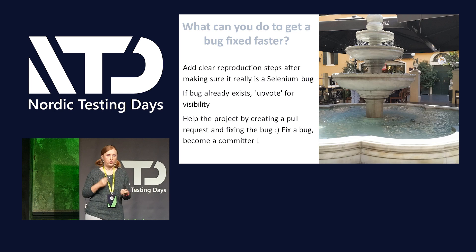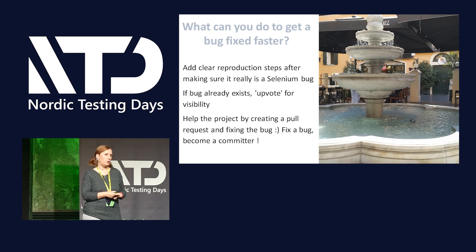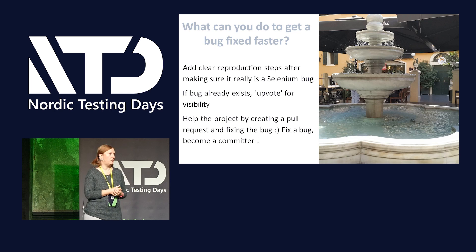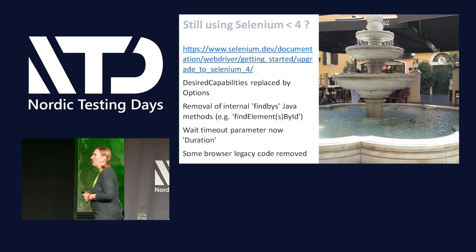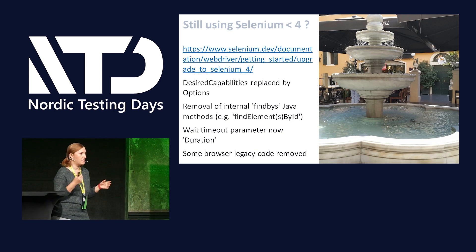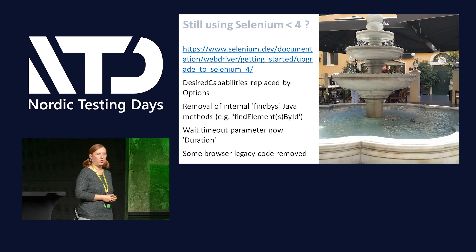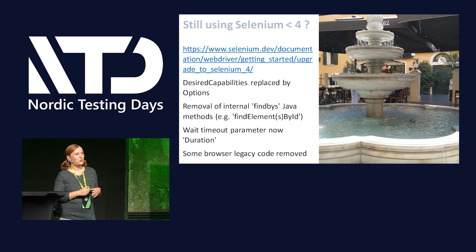Before moving into what's new, I know most of you are aware that Selenium 4 was released in 2021 in October or November. My question to you is: who here is still using an older version — a 3.x version? I did a poll on LinkedIn and Twitter a few months ago asking the same question, and I was shocked to see that around 30% of the people who responded were still using Selenium 3.